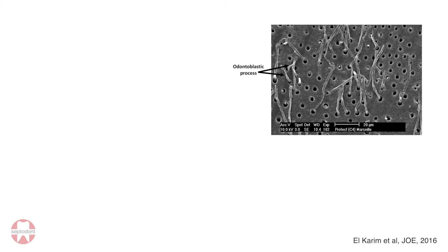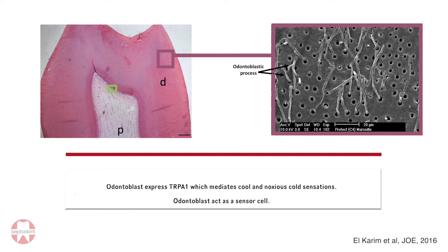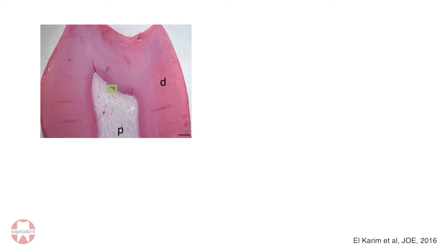Odontoblasts have a process that extends deep into the dentine, and they act as sensor cells because they express what we call transient receptor potential (TRP) channels. These channels act as pain sensors — through these receptors, odontoblasts sense noxious cold, noxious heat, mechanical stimulation, and chemical stimulation such as toxic compounds.